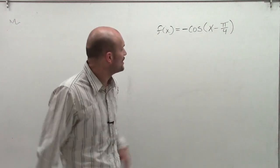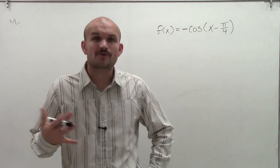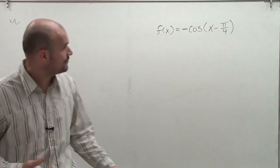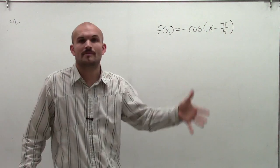OK, here we go. I have f of x equals negative cosine of x minus pi over 4. So what are we going to do for this problem? Well, the first thing we want to do when looking at a problem like this is determine all of our main information.